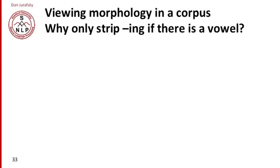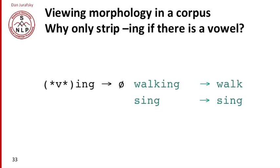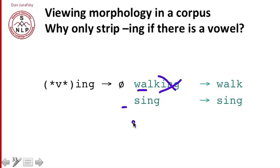Let's look again at the rule that strips 'ing,' and practice using Unix tools to look at morphology in a corpus. Why are we stripping 'ing' only if there's a vowel preceding it? In a word like 'walking,' we have a vowel before the 'ing,' so it's okay to remove it. In a word like 'sing,' there are no letters at all before the 'S' — no previous vowels — so the rule doesn't apply.